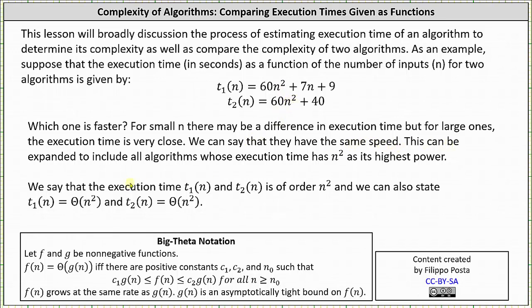This can be expanded to include all algorithms whose execution time has n squared as its highest power. We say the execution time t sub one of n and t sub two of n is of order n squared, and we can also state that t sub one of n is Big Theta of n squared, and so is t sub two of n.